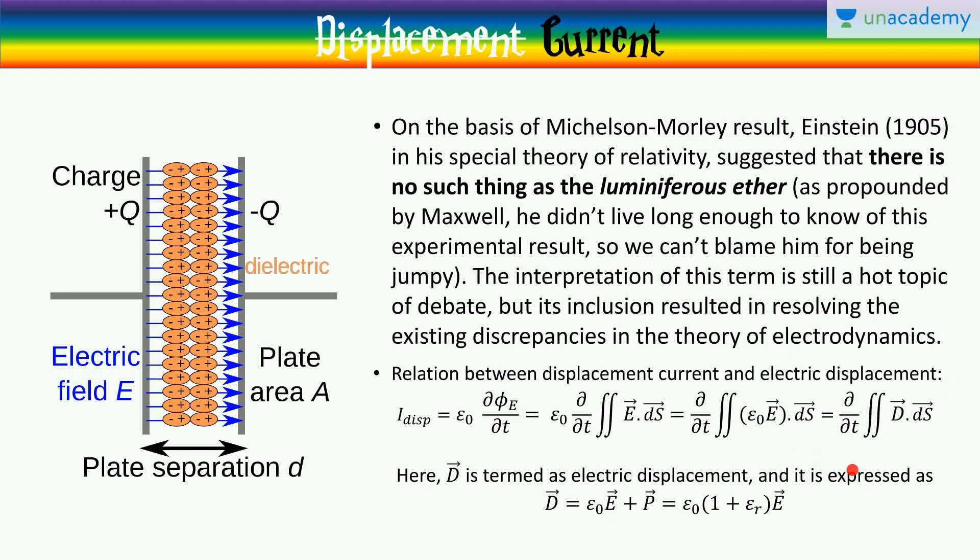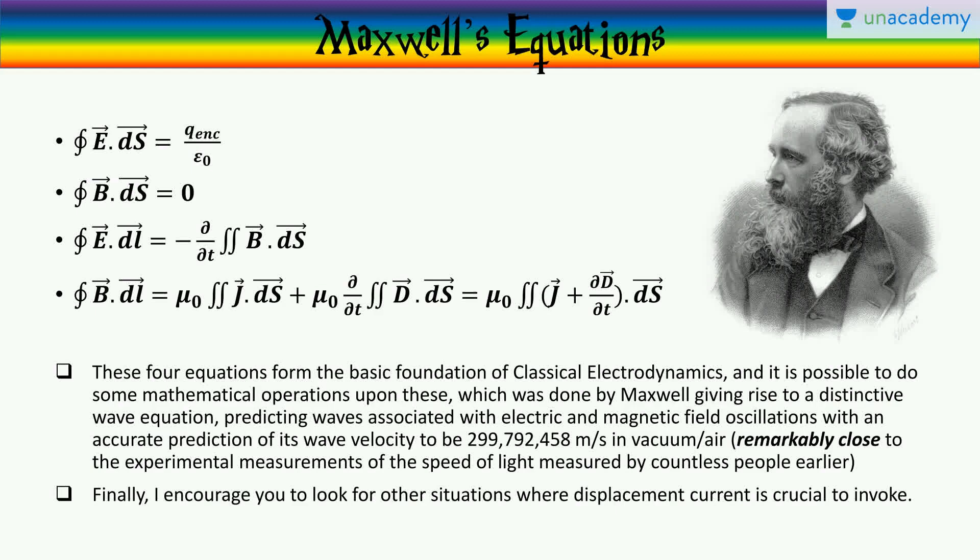So, this electric displacement epsilon naught E is changing in time, which is an interpretation of the displacement current, where D is generally expressed as epsilon naught E plus P, where P would be only invoked in the case of a real dielectric in between the capacitor plates. And also expressed as epsilon naught E plus epsilon naught chi_e E, where epsilon_R is a dielectric constant.